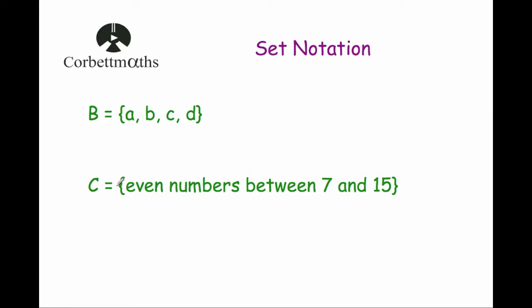The set C is a description. Whenever I get a description for a set I tend to then write down beneath what it is. So we have the set of even numbers between 7 and 15, so that would be 8, 10, 12 and 14. So these are some examples of sets — there can be numbers, letters, descriptions and so on.